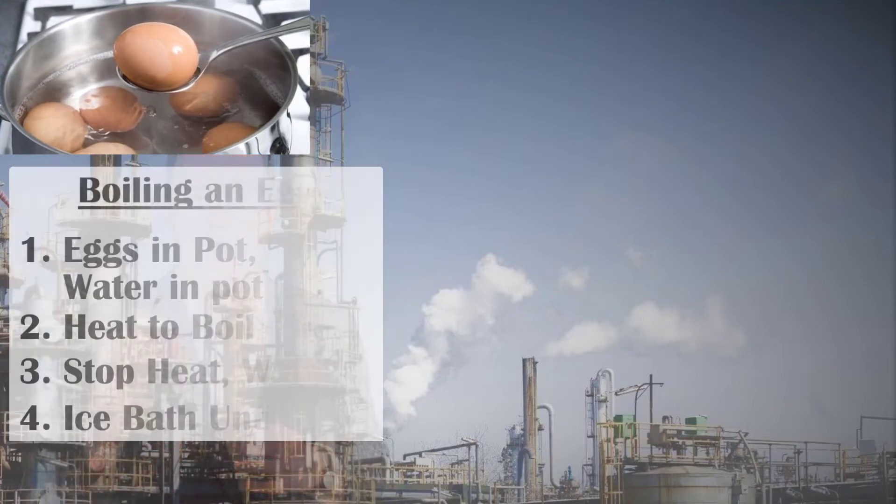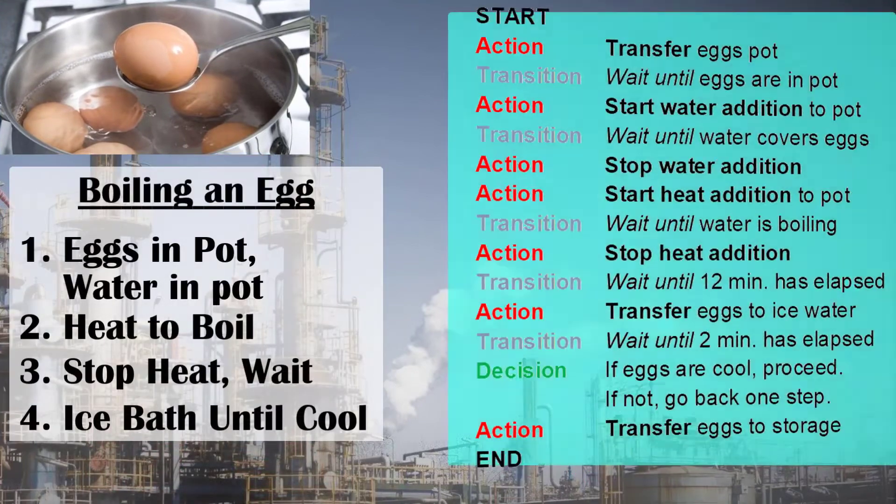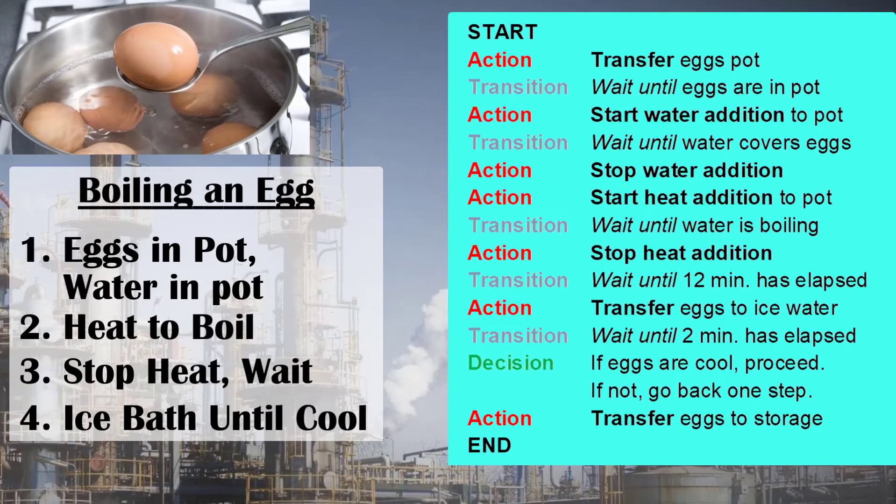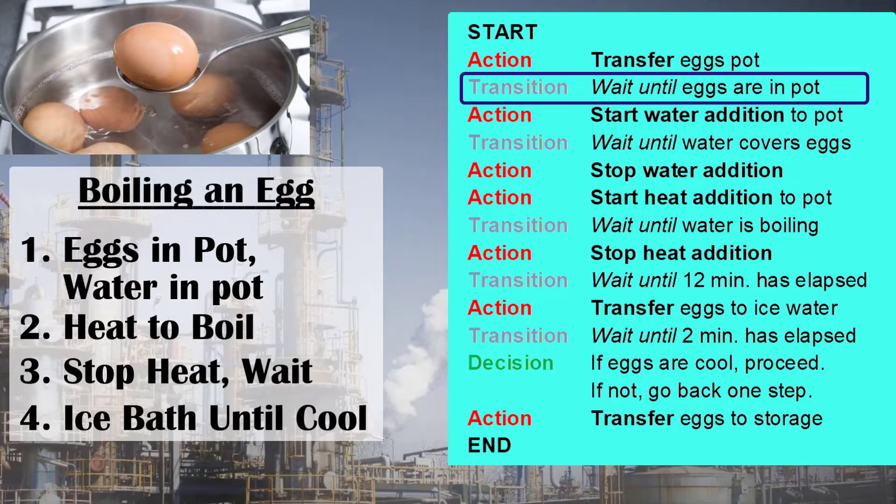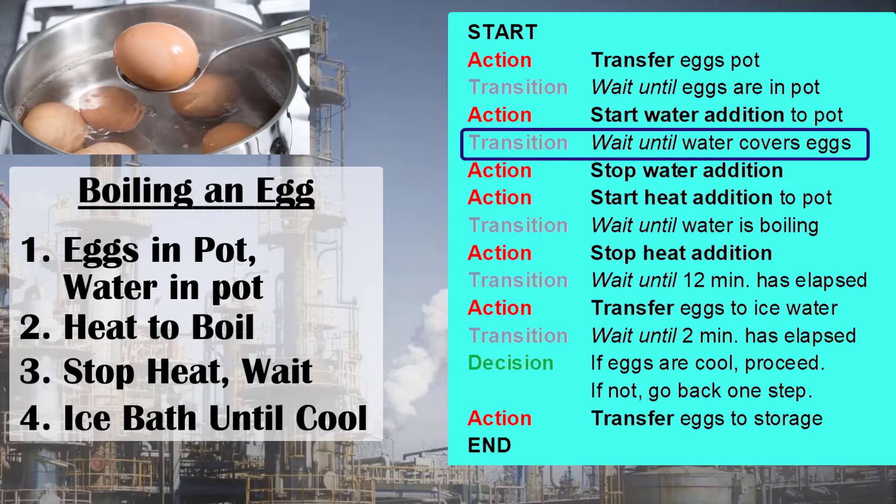Back to egg boiling. We can take our recipe and break it up into a series of actions, each starting with a verb, broken up by transitions where we either are waiting for the action to complete or for some other trigger to be true. So, we put the eggs in the pot, then turn on the water. The first transition is simply waiting for the action to complete, but the second one is waiting for the thermodynamic state to change, waiting for a level to reach a threshold.